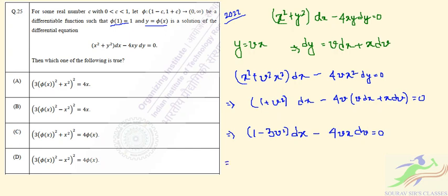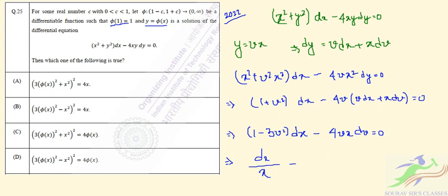If we divide both sides by x and by (1 minus 3v squared), we get dx by x equal to minus 4v dv over (1 minus 3v squared).